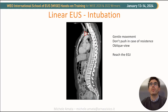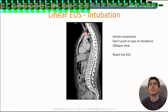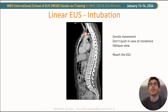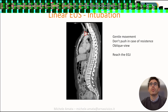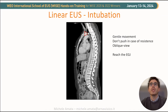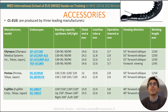We need to reach the EGJ junction passing through the mouth and the esophagus. We need to be gentle and not push in case of resistance, and keep in mind that our instrument has an oblique view. The angle of view will be slightly different depending on the manufacturer model.